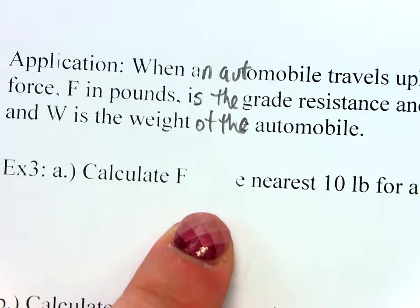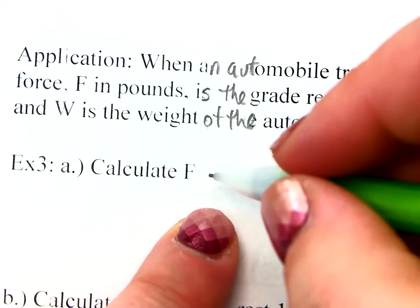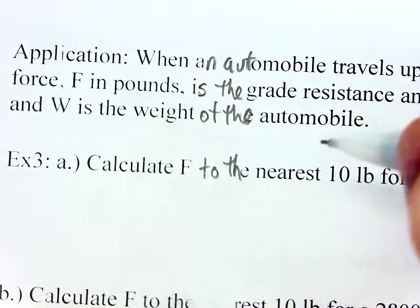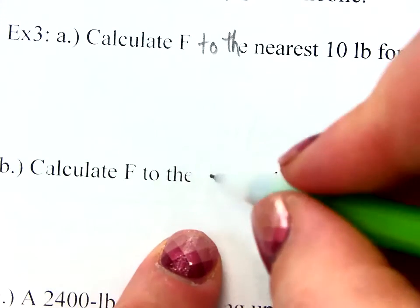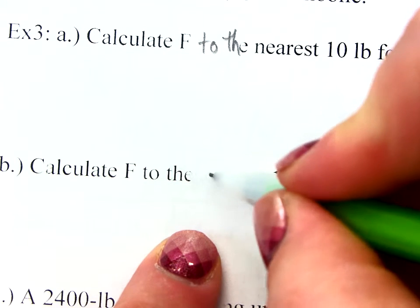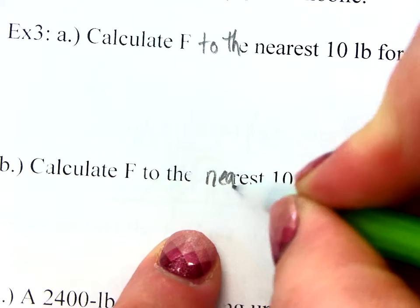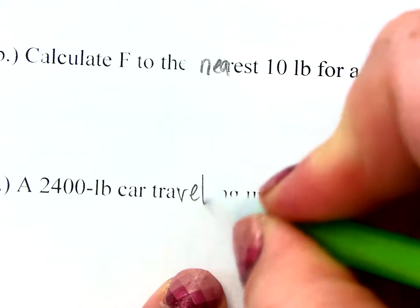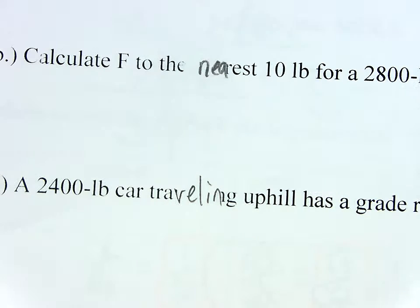In example 3A, it should be, calculate F to the. And then in B, it should be, to the nearest. And then in C, traveling. So sorry about that.